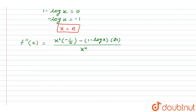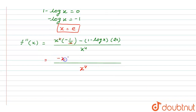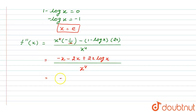Simplifying, the x in the denominator x⁴ cancels with one x from the numerator. We then expand: −x minus (1 − log x) times 2x gives us −x − 2x + 2x·log x, which simplifies to −3x + 2x·log x in the numerator, over x⁴.